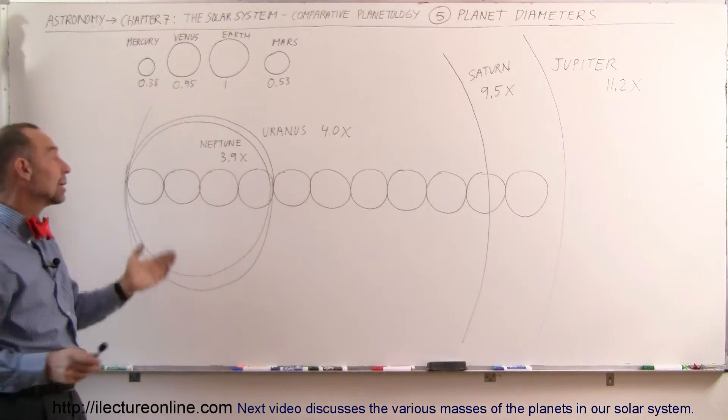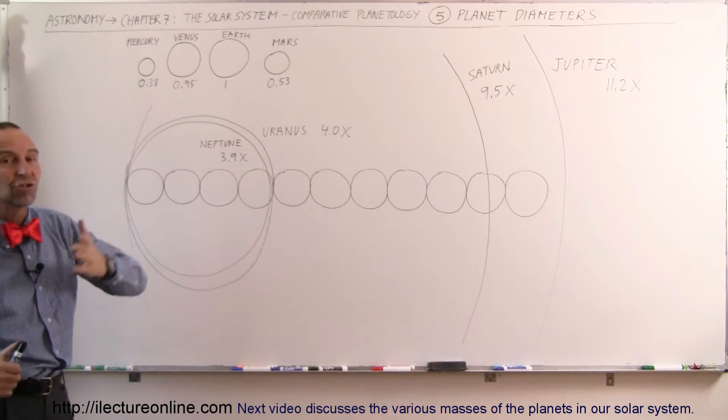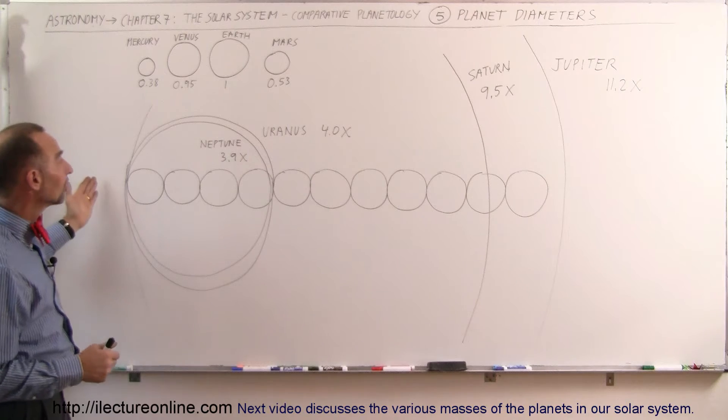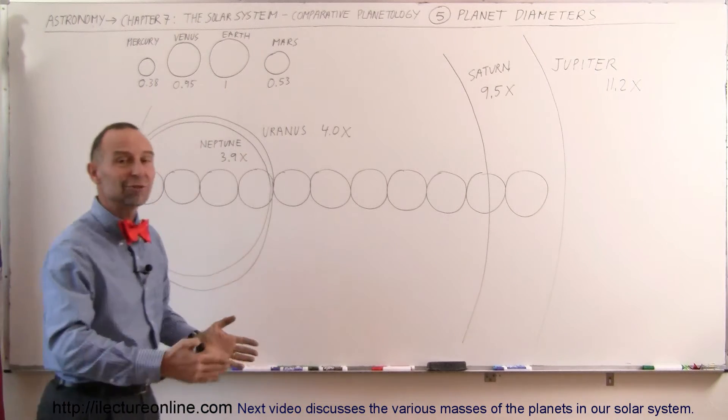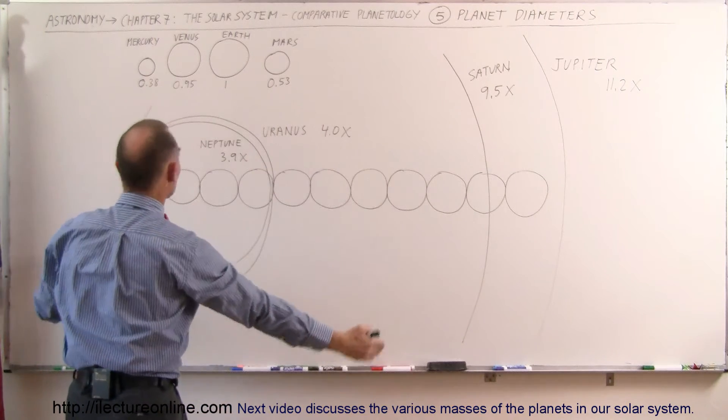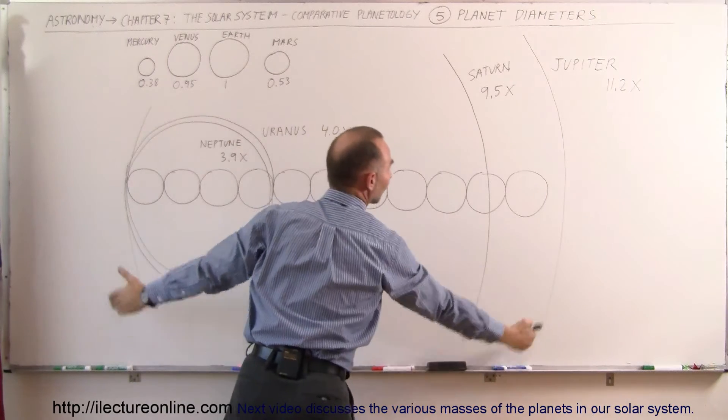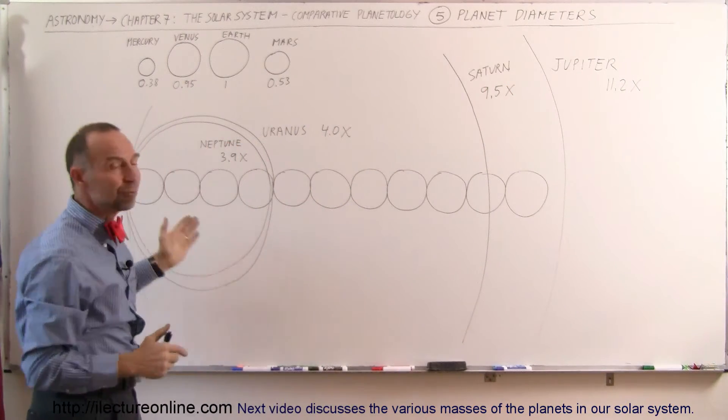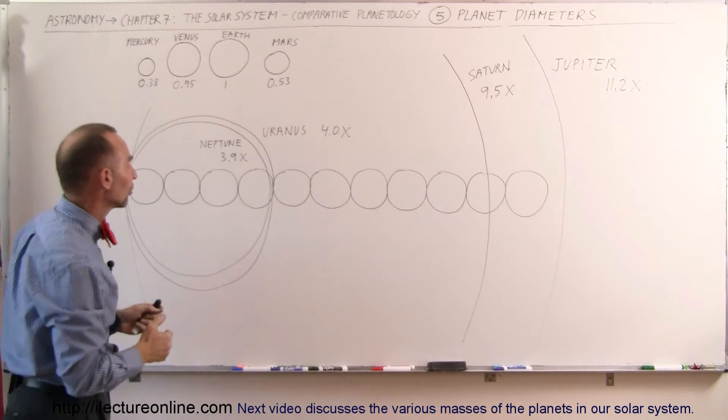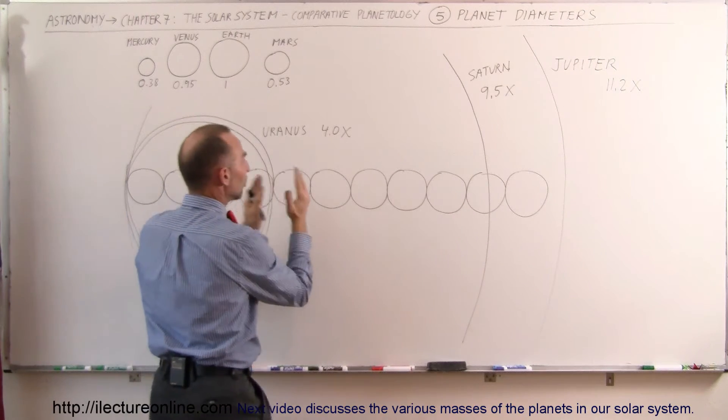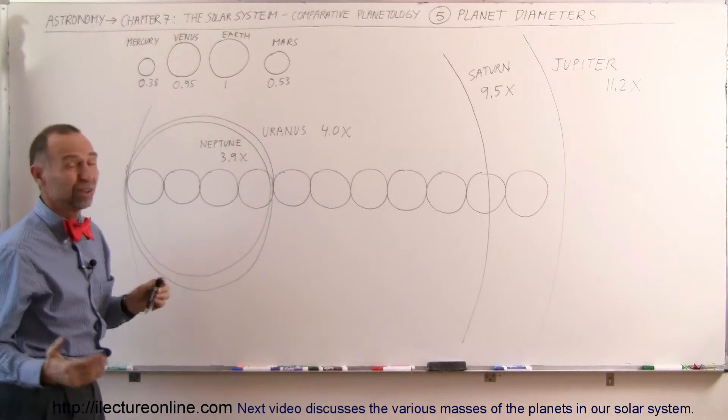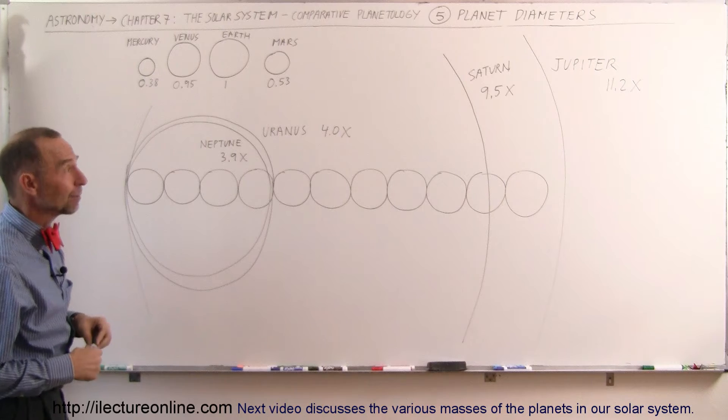But now let's compare the Earth to the four giant gas planets, and giant is actually a good word for that. Because look at the size of Jupiter. I couldn't even draw all of Jupiter on the board, but if you look at the far outside lines right there, you can see that Jupiter's diameter is 11.2 times the diameter of the Earth. You can actually fit more than 11 Earths in a row inside the diameter of Jupiter. So you can imagine Jupiter is a pretty large planet.